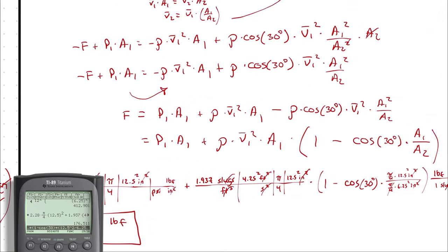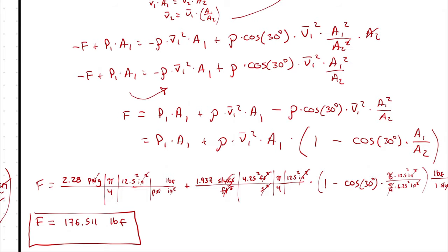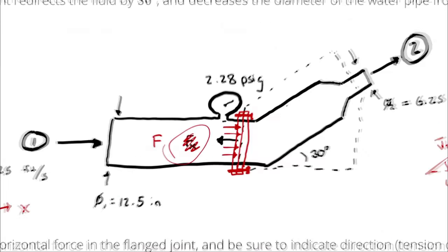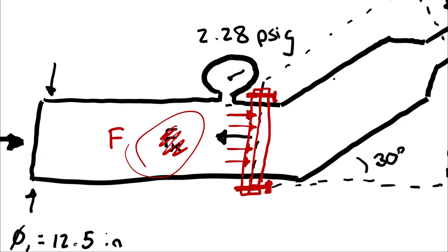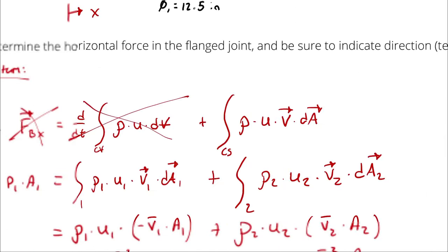The problem asked for the direction — tension or compression. We are solving for a reaction force: the force required to hold the joint in place is to the left at 176 pounds. That means the joint naturally wants to pull apart, so in order to hold it together we must provide a force in the left direction. Therefore, the joint is in tension.